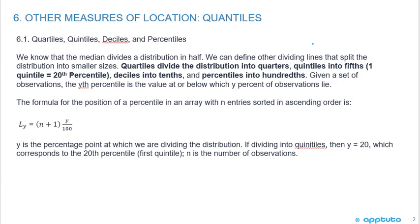We know that the median divides the distribution in half. We can define other dividing lines that split the distribution into smaller sizes. Quartiles divide the distribution into quarters, quintiles into fifths (one quintile equals the 20th percentile), deciles into tenths, and percentiles into hundredths. Given a set of observations, the yth percentile is the value at or below which y percent of observations lie.